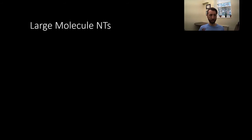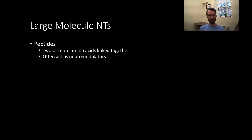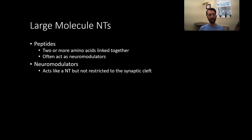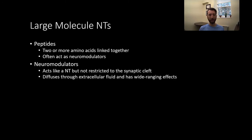Let's talk about some of the stuff we're fitting into this category. This includes large molecule neurotransmitters like peptides, which are two or more amino acids linked together, which can often act as neuromodulators. A neuromodulator is something that acts like a neurotransmitter but is not restricted to the synaptic cleft, so it can act elsewhere. This can diffuse through extracellular fluid and have wide-ranging effects. We'll talk about a couple examples of these neuromodulators in this discussion.